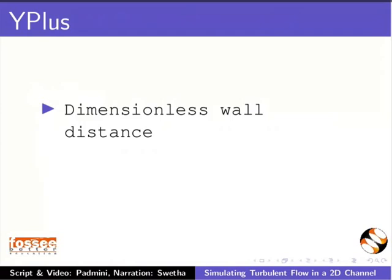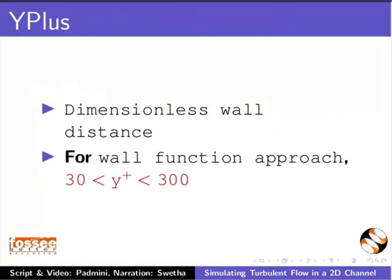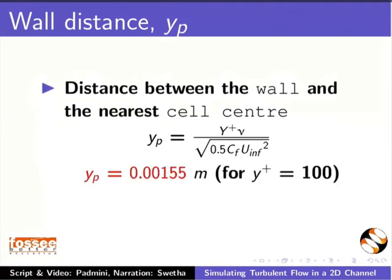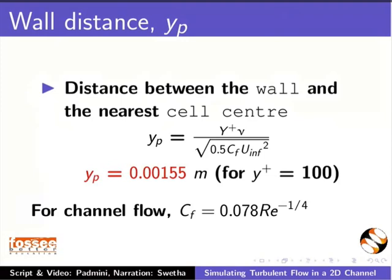Y-plus is the dimensionless wall distance. For the wall function approach, the Y-plus value should be between 30 and 300. Let YP be the distance between the wall and the nearest cell center. For our case, YP is 0.00155 for a Y-plus value of 100. For channel flow, the skin friction coefficient Cf is given by this formula. The additional reading material has more details on the wall function approach and mentions the steps used to calculate YP.